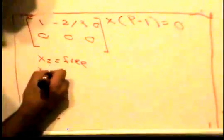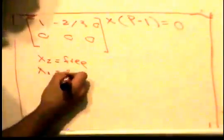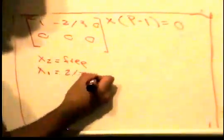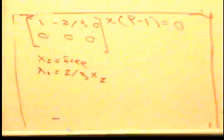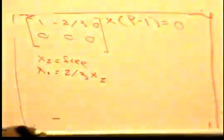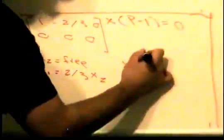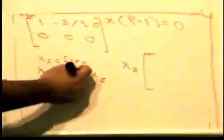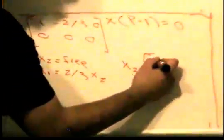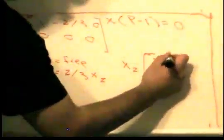If I write this in vector form, it's going to be x2 times the vector [2/3, 1].